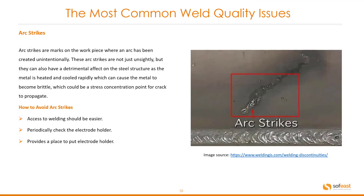Arc strikes are marks on the workpiece where an arc has been created unintentionally. These arc strikes are not just unsightly but can also have a detrimental effect on the steel structure, as the metal is heated and cooled rapidly, which can cause the metal to become brittle and could be a stress concentration point for a crack to propagate. To avoid arc strikes, ensure access to welding is easier, and periodically check the electrode holder and provide a place to rest it. You can see these unsightly and potentially dangerous arc strikes here.